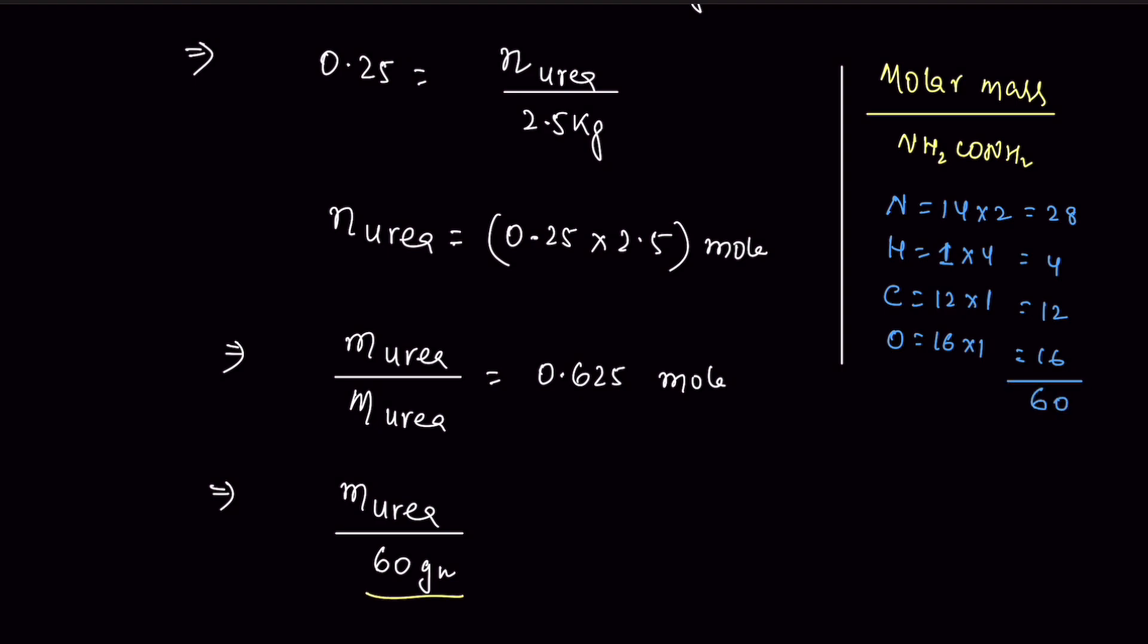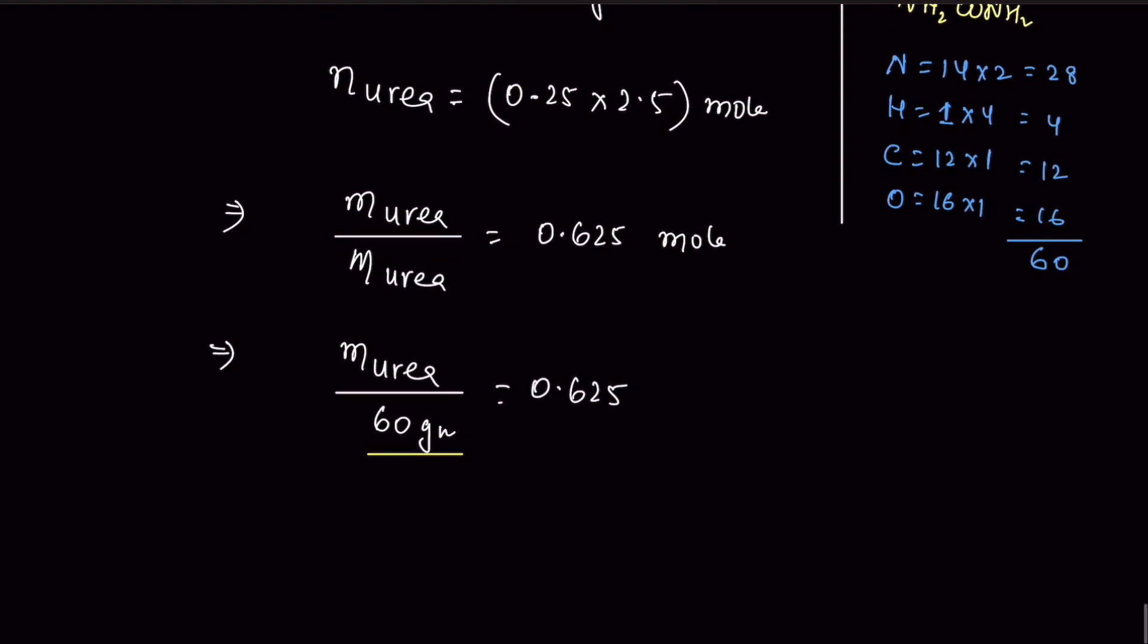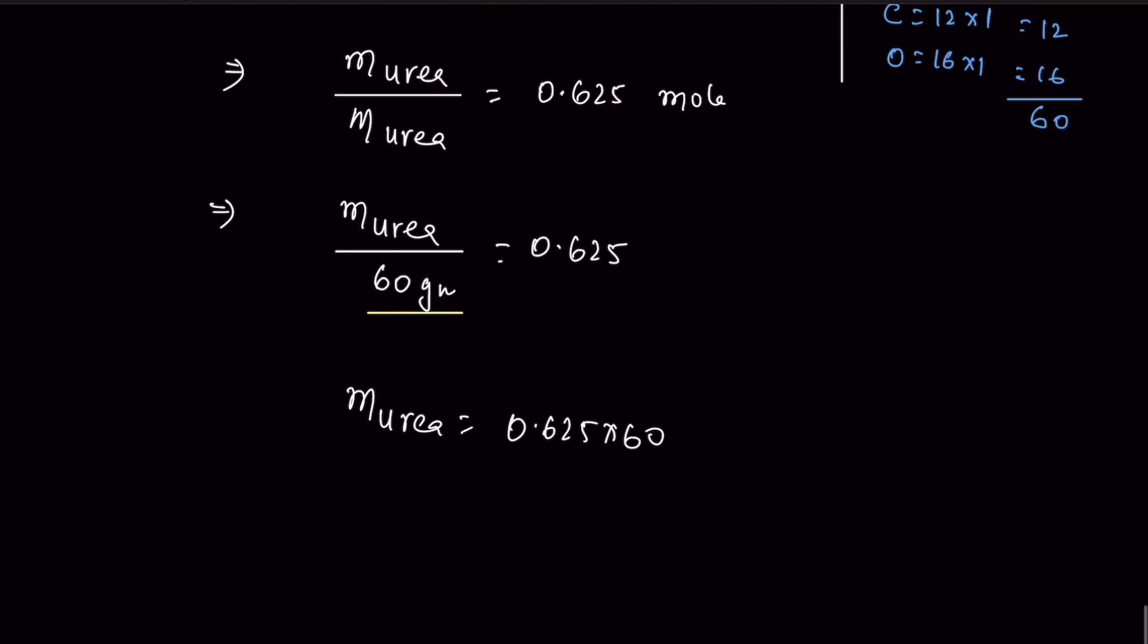So from this value we are writing it here, 60, and it's equal to 0.625. So mass of urea is equal to 0.625 times 60. So we can say that it's equal to 37.5 grams.